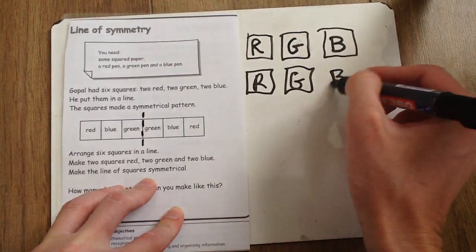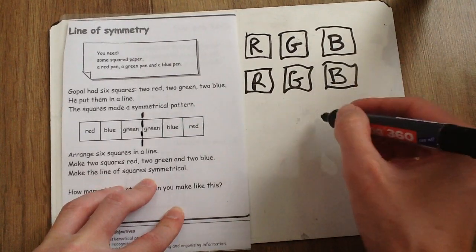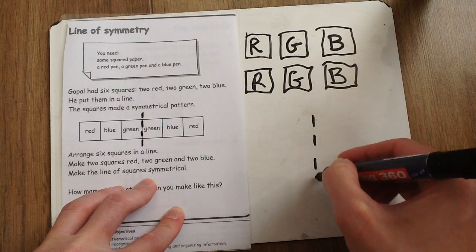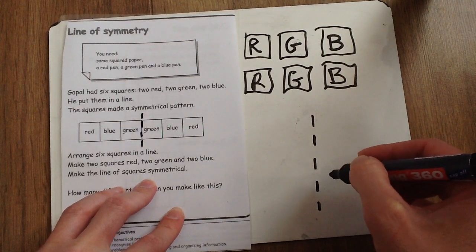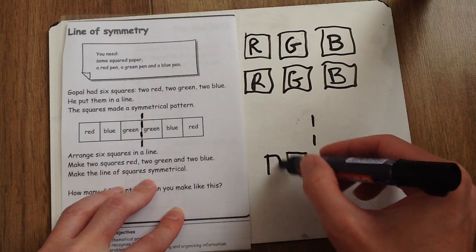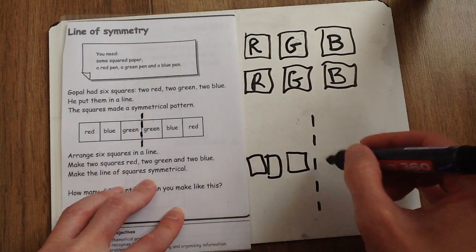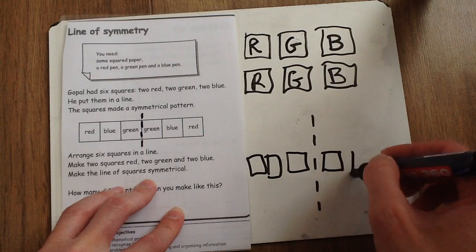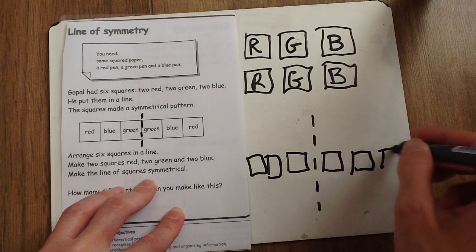They must be in a line. My suggestion would be to draw a mirror line. And then you can put one colour here, one colour here, and one colour over here. And then one colour this side, one colour this side, and one colour this side.